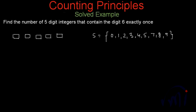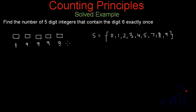There is a possibility that 6 is in the first place. If 6 is there, that place has only one choice. After that, each of the remaining 4 places can be filled with any of the 9 digits from 0 to 9 other than 6. So each of those 4 places has 9 choices, giving us 9 to the power of 4 total choices for this case.